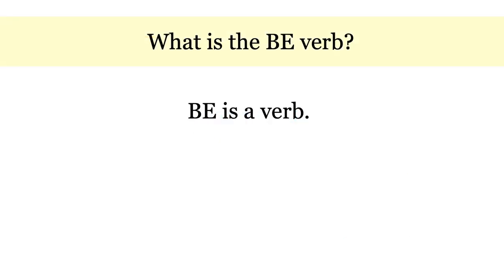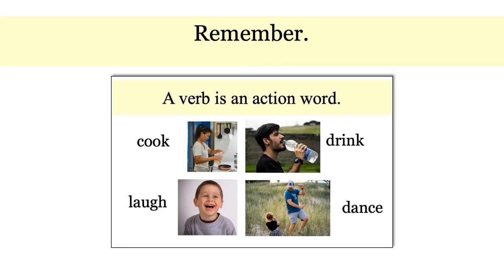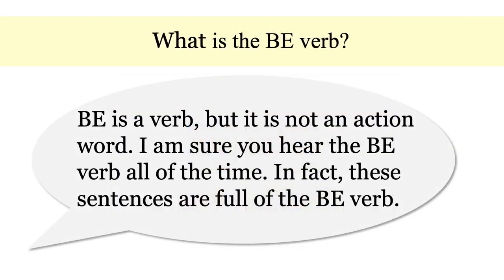What is the BE verb? BE is a verb to start with. Remember, a verb is an action word like cook, laugh, drink, and dance. BE is a verb, but it is not an action word. I am sure you hear the BE verb all of the time. In fact, these sentences are full of the BE verb.